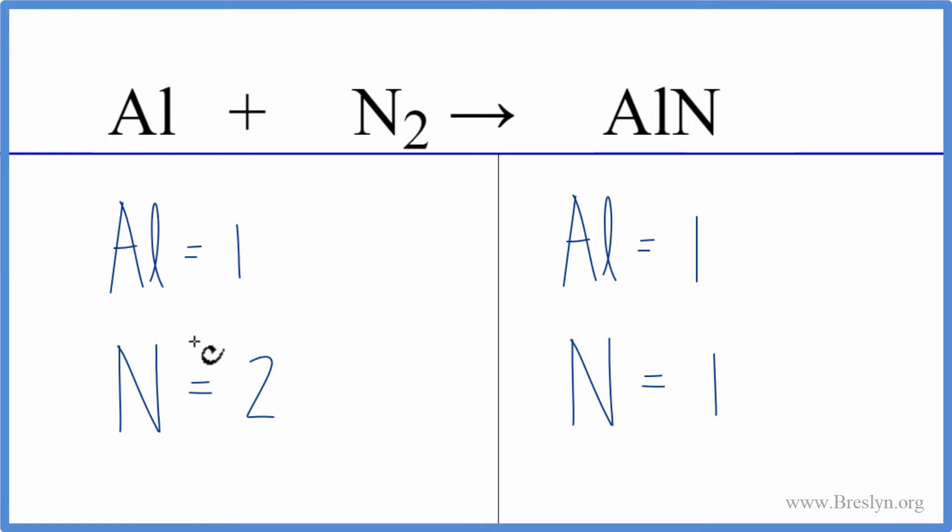So let's see, looks like we need to balance the nitrogens first, and we could do that by putting a coefficient of 2 in front of the aluminum nitride. So this 2 applies to everything. We have 1 times 2, so that'll give us 2 aluminums, and 1 nitrogen times the 2. That gives us 2 nitrogens. So we've balanced the nitrogens.